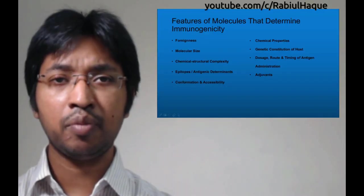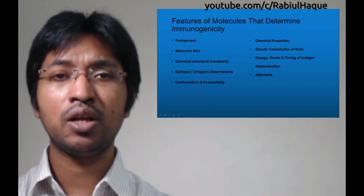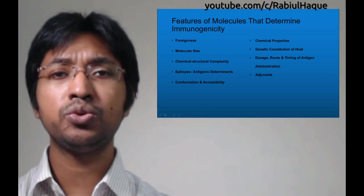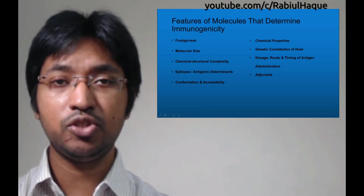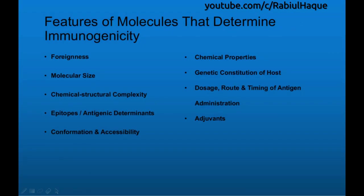Now that we have talked about the various definitions, we will move on and talk about the features of molecules that determine their immunogenicity. The features will include: foreignness, molecular size, chemical structural complexity, epitopes, conformation and accessibility, chemical properties, the genetic constitution of host, dosage, route and timing of antigen administration, adjuvants, etc.